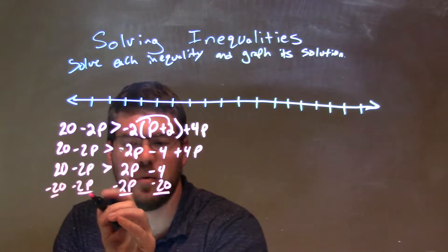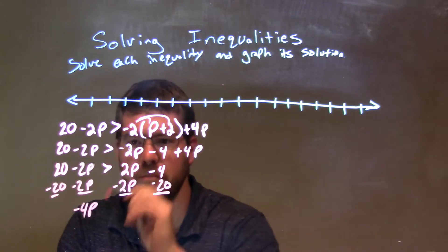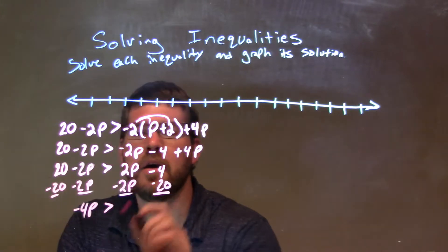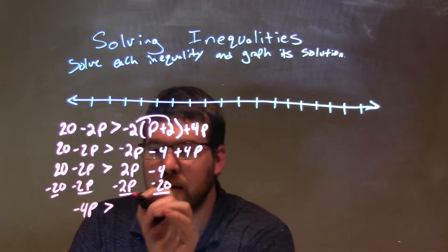Okay, that leaves me with negative 2p minus 2p to the negative 4p. I'm sitting on the left, and that's greater than, well, negative 4 minus 20 is a negative 24.